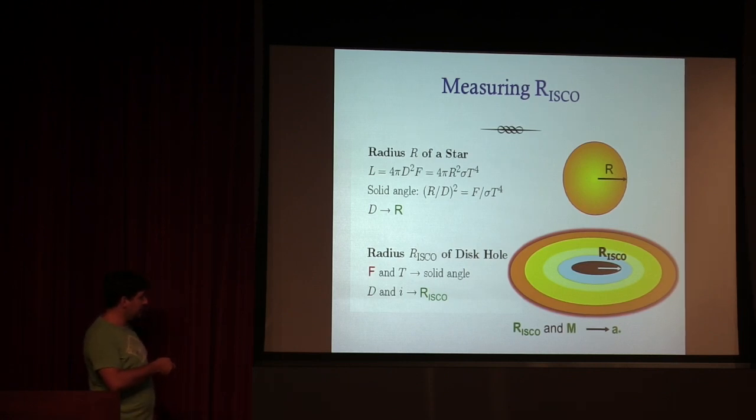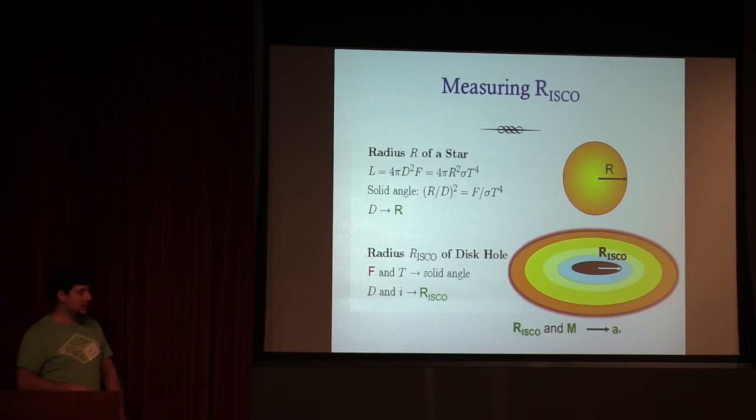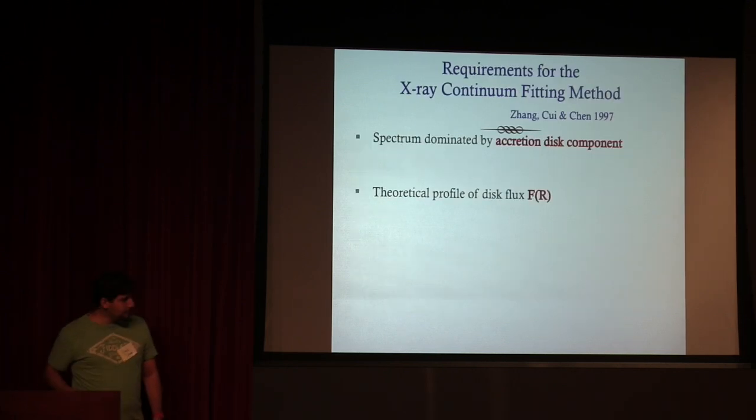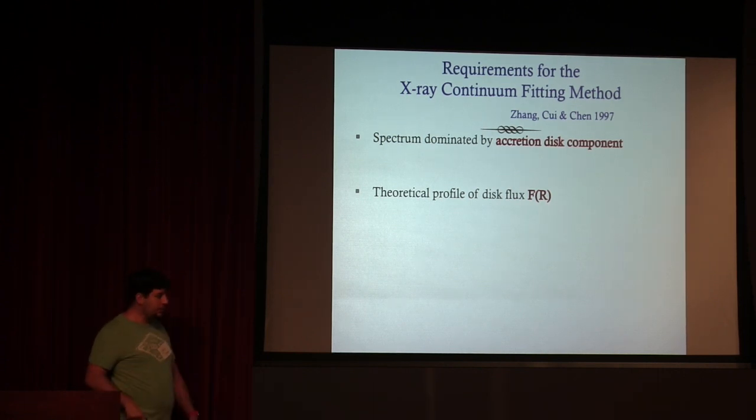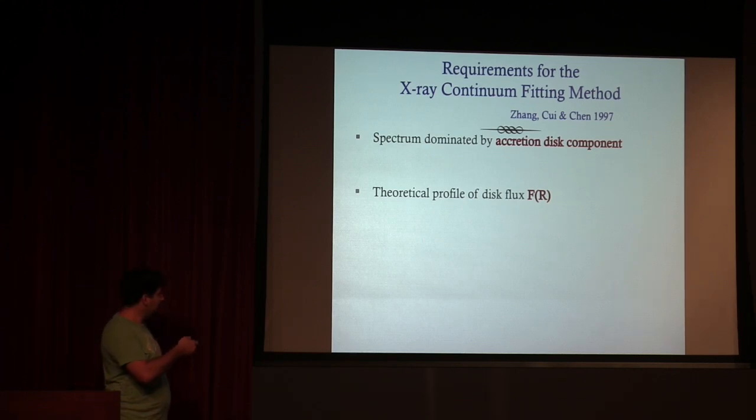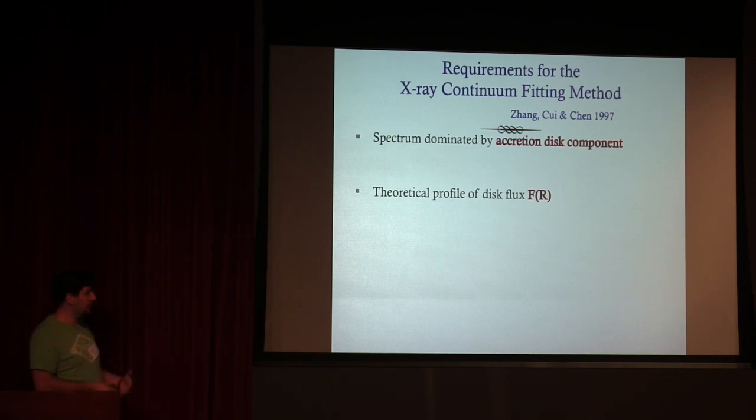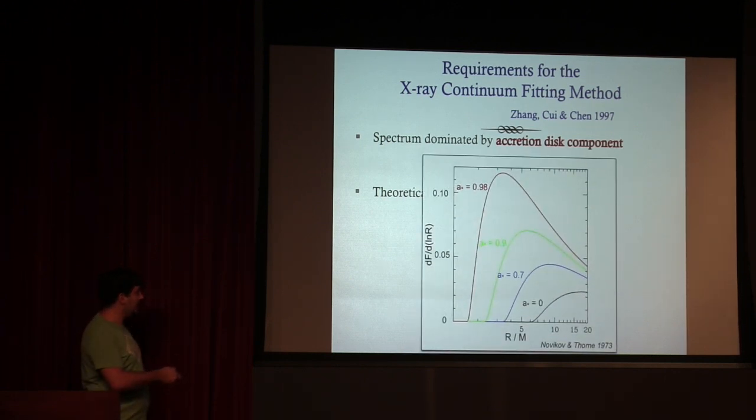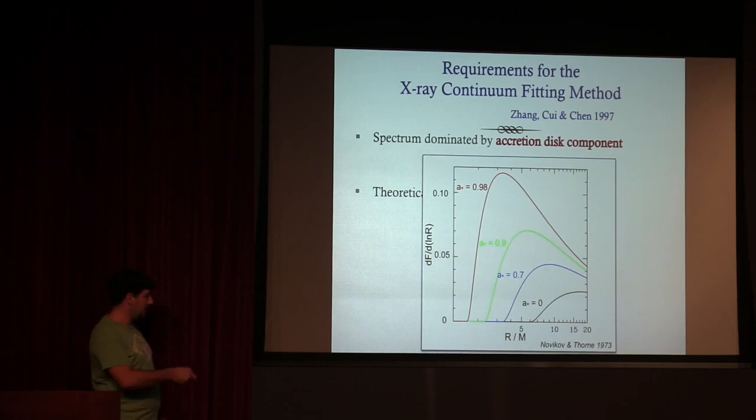The trick, though, is that we're not actually after inner radius as a sort of fundamental quantity of interest—we're after spin. So to turn a dimensional disk radius in units of kilometers into a dimensionless spin, we need to scale out the mass. So we also need to know the mass. That is: distance, inclination, and mass let us turn a single observation into a spin measurement. And some further, just more nuanced requirements—we want in general that the observation in question is dominated by the accretion disk component that we're trying to measure.